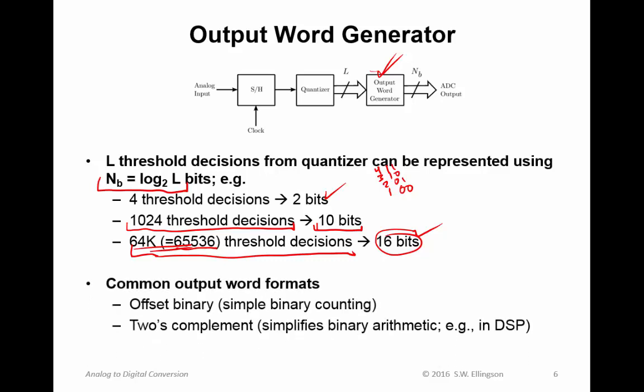So we have two common output word formats. Offset binary is one, that's simple binary counting. The other scheme is two's complement, a very simple modification which facilitates binary arithmetic. There are a few other output word formats but these are the two big ones.